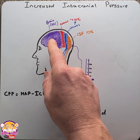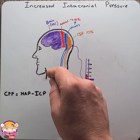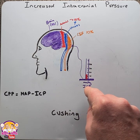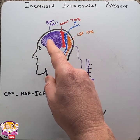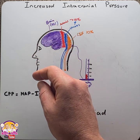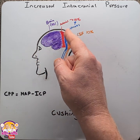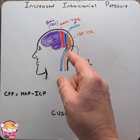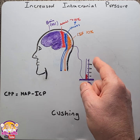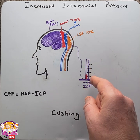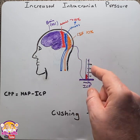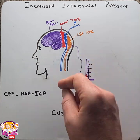Normally, if the volume of one of these components was to increase, the volume of the other two would decrease to maintain the ICP. But if a pathological condition was to occur and there was a significant increase in one of the components, it would exceed the ability for the other two components to decrease, and therefore ICP would start to increase. An ICP above 20 millimeters of mercury is the point where an intervention should occur.